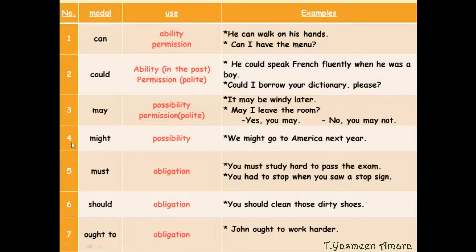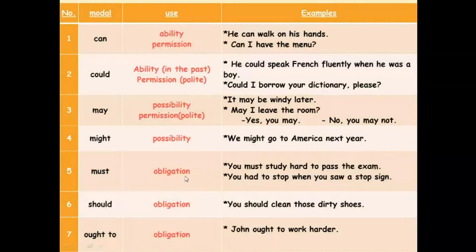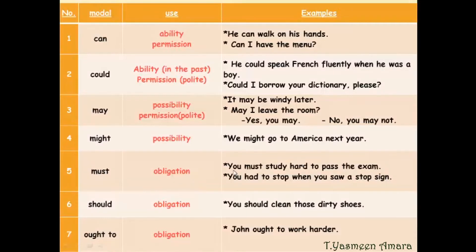Number four: might. We use 'might' for possibility. Example: 'We might go to America next year.' Number five: must. We use 'must' for obligation. Example: 'You must study hard to pass the exam.' 'You had to stop when you saw a stop sign.' Note: 'had to' is the past form of 'must'.